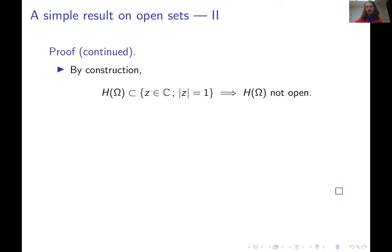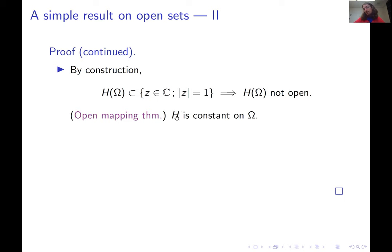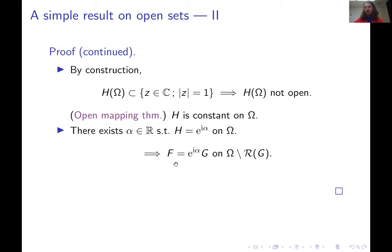By construction, the image of omega under H must be a subset of the unit circle in the complex plane, since the modulus of H is one on omega. Any subset of the unit circle cannot be open. So the image of omega under H cannot be open. By the open mapping theorem from complex analysis, since H is holomorphic on omega, H must be constant. H is constant with modulus one, so H = e^{iα}. Unraveling this equation for F and G gives F = e^{iα}G. Since omega without the roots of G has an accumulation point, and F and e^{iα}G are entire, the identity theorem tells us F and G agree up to global phase.